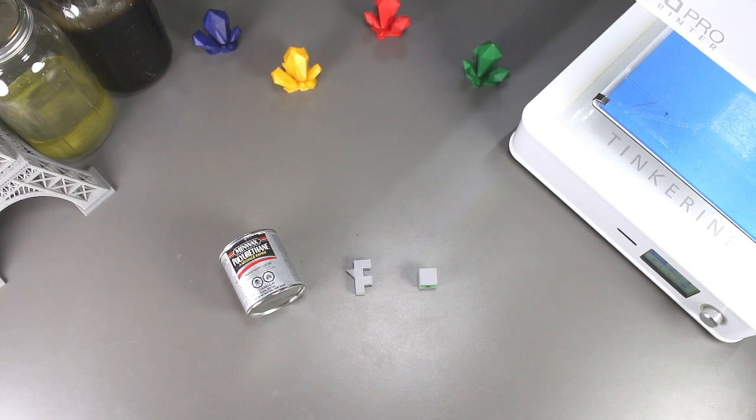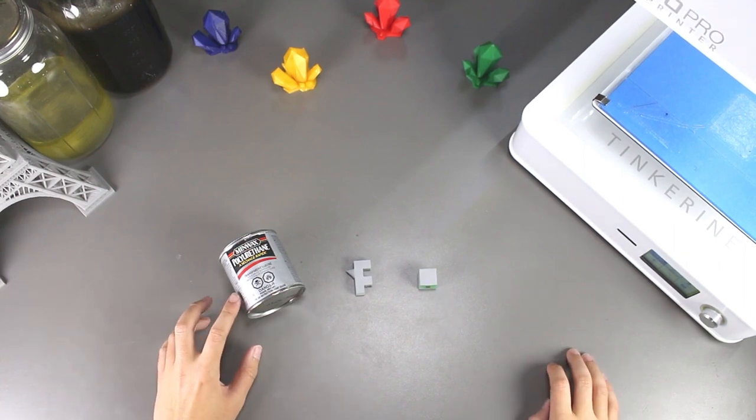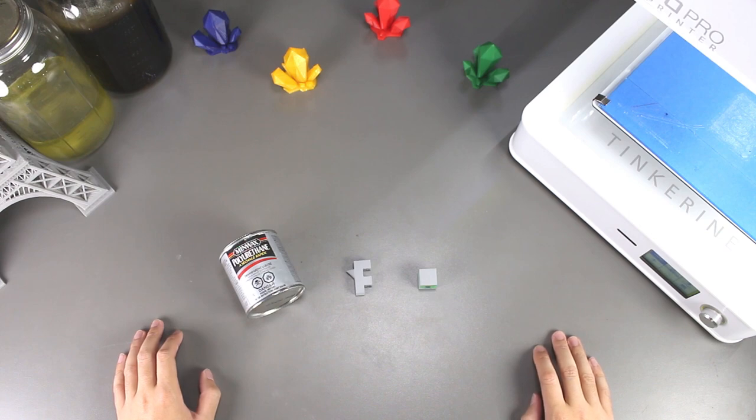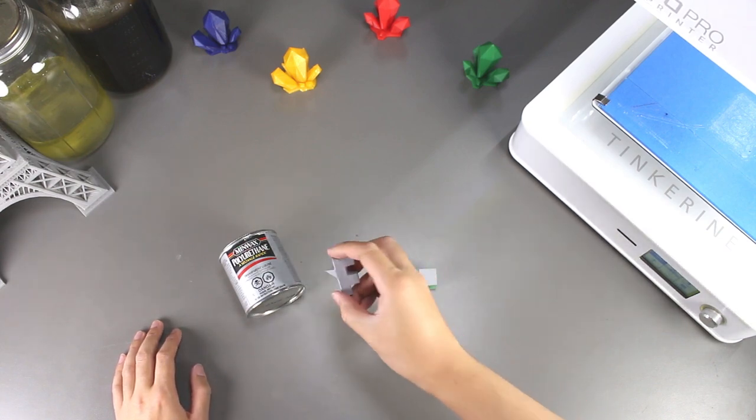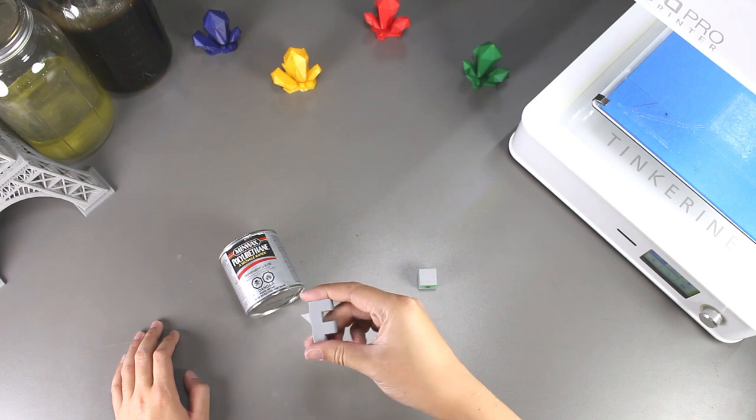Well there you have it. We tried using polyurethane to polish and smooth out our PLA print and I would say it works. The two parts were relatively smooth even though we used different methods.